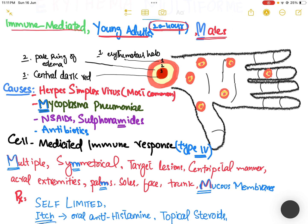On presentation there is a central dark red area with surrounding pale ring of edema, and at the periphery there will be an erythematous halo.